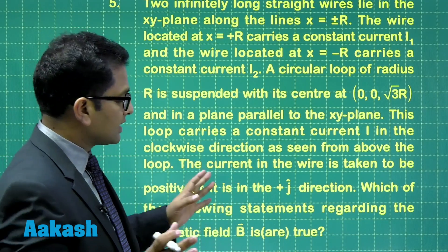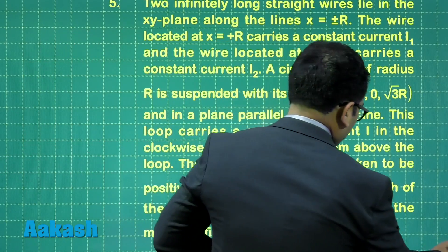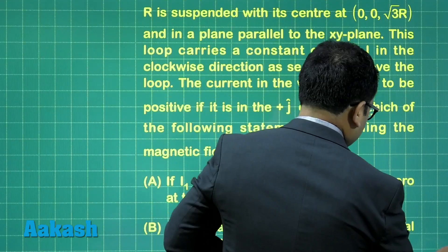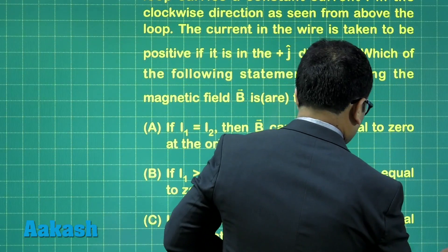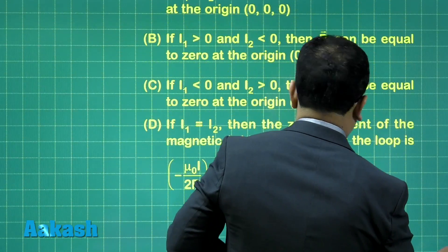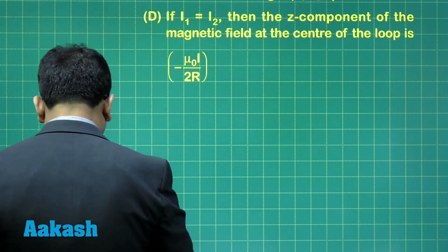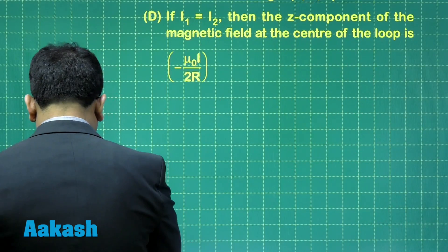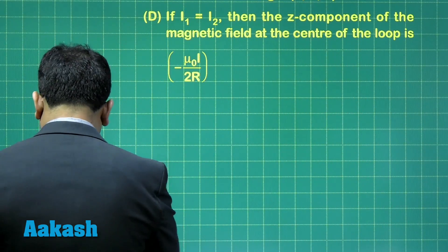The current in the wire is taken to be positive if it is in the plus j direction. These are the conditions which are given and we need to choose the options. But before that, let's simply try to draw the arrangement, because the figure is very, very essential.